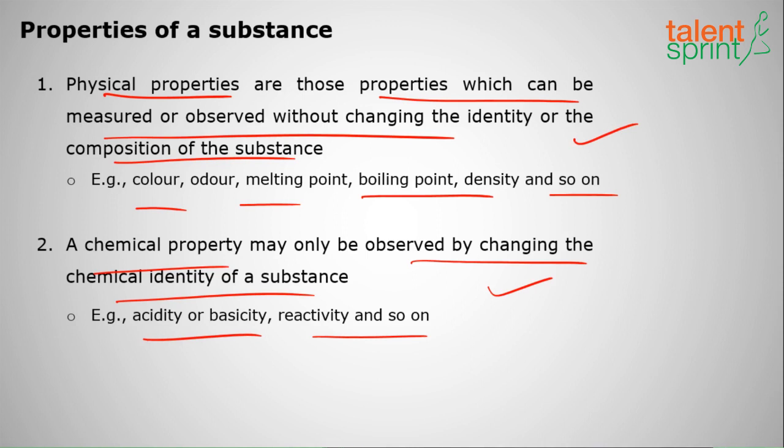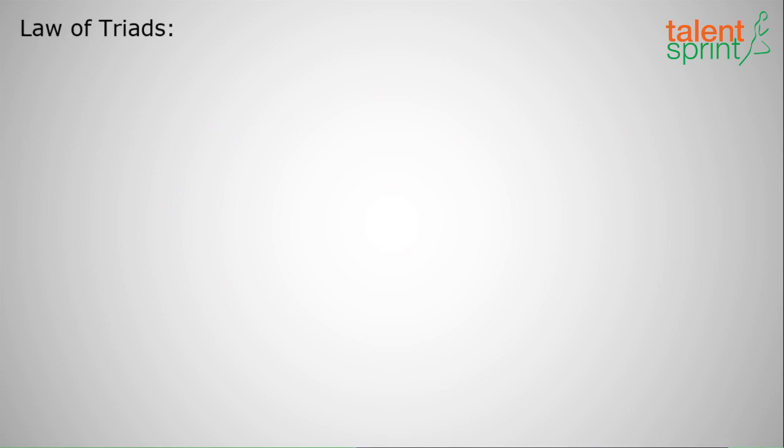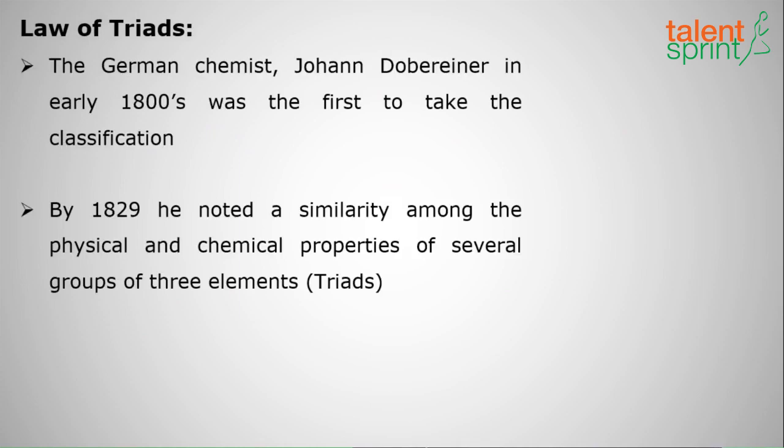Moving on to Law of Triads. Tri means three. The German chemist Johann Dobereiner in the early 1800s was the first to take up the classification of various elements officially.